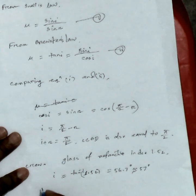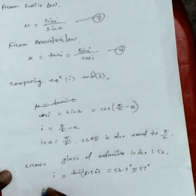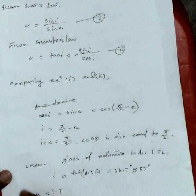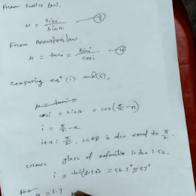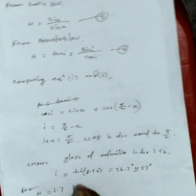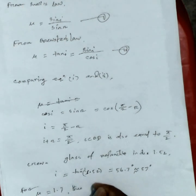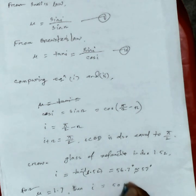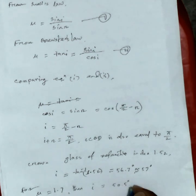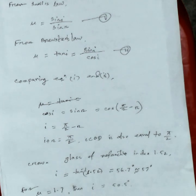Now for a refractive index μ equal to 1.7, if you calculate the polarizing angle using Brewster's law, i equals approximately 59.5 degrees. So the polarizing angle for a medium with refractive index 1.7 is 59.5 degrees.